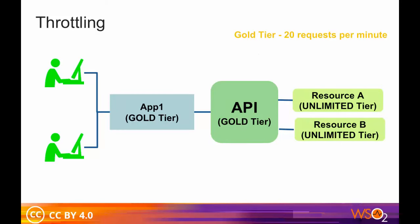Let's look at a scenario where throttling is used. Two users named Kim and Alex subscribe to an API using the Gold subscription, which allows 20 requests per minute. They will both use the App1 application for the subscription, which again has a throttling tier set to 20 requests per minute. All resource level throttling tiers are unlimited. In this scenario, although both users are eligible for access of 20 requests per minute to the API, each will practically have a limit of only 10 requests per minute.